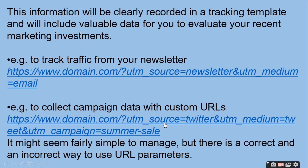To collect campaign data with a custom URL, you write www.domain.com?utm_source=Twitter. Aapka source hai Twitter, aur utm_medium=tweet. Aur medium kya tha — aapne jo bhi information tweets se li, aur campaign kya tha — Summer Sale tha. Summer Sale ke tweets ko Twitter se lekar aapne apna campaign data collect kiya.